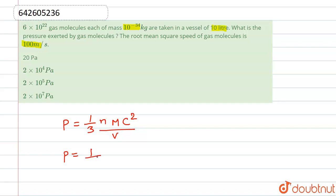we have 6 × 10^22 gas molecules times the mass given, 10^-34